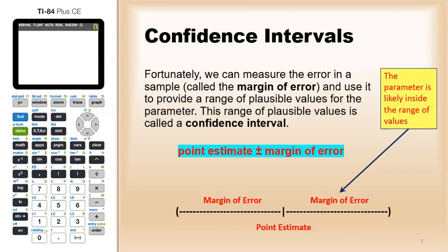Done right, the actual true parameter, the true value, is likely somewhere in that interval. It could be on the right side, could be on the left side, could be near the point estimate, could be near the ends, but somewhere in the interval is likely the parameter.